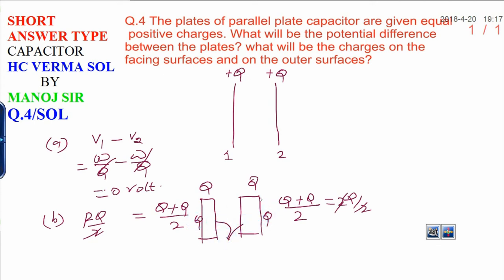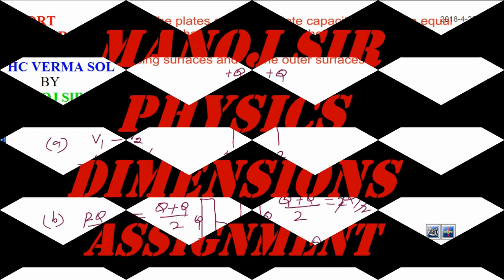Then what about the inner faces? On the inner faces, the charge is the total charge minus this, which is Q minus Q, and that equals zero. Here is the answer.